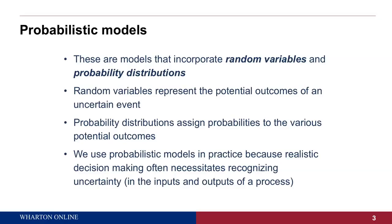In terms of a definition of a probabilistic model, these are models that incorporate random variables and probability distributions. A random variable represents the potential outcomes of an uncertain event. An easy way of thinking about a random variable is an event that has not yet happened but you know is going to. For example, I have a die in my hand — I'm going to throw it, a number one through six is going to come up, but I don't know what it is prior to having thrown the die. So, prior to throwing the die, we'd call the outcome a random variable.